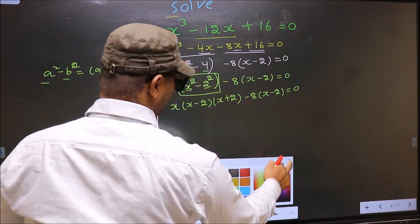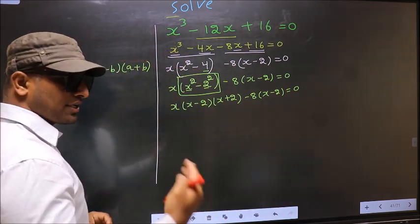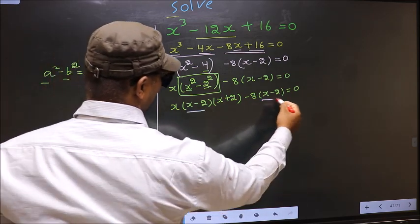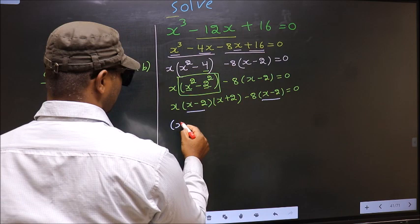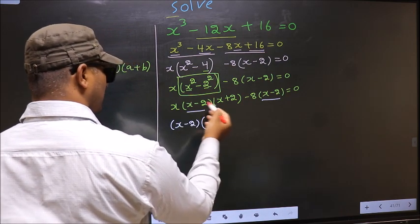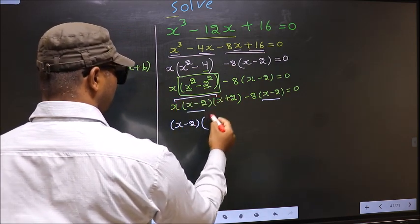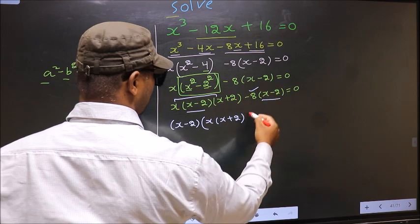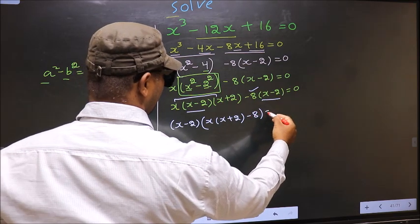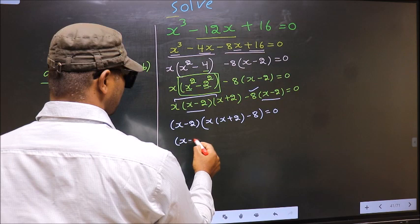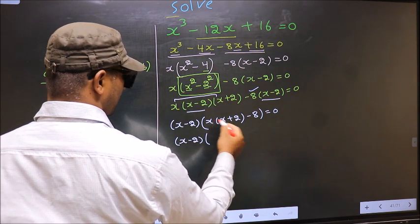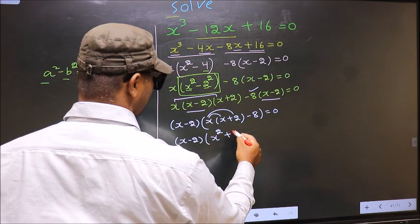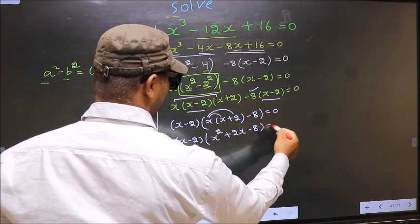Now from this entire equation, what can be taken out common is x minus 2. So x minus 2 goes outside. Over here you are left with x times x plus 2, and over here minus 8, equal to 0. Now x minus 2 — open up the brackets — you get x squared plus 2x minus 8 equal to 0.